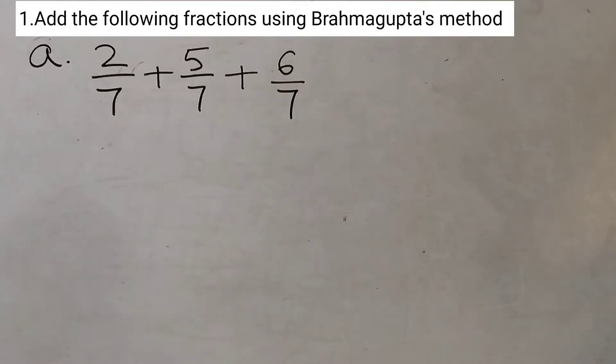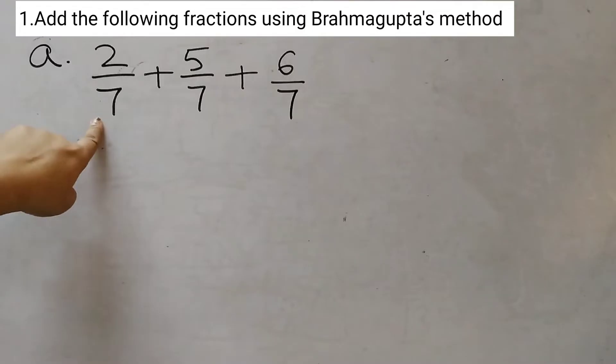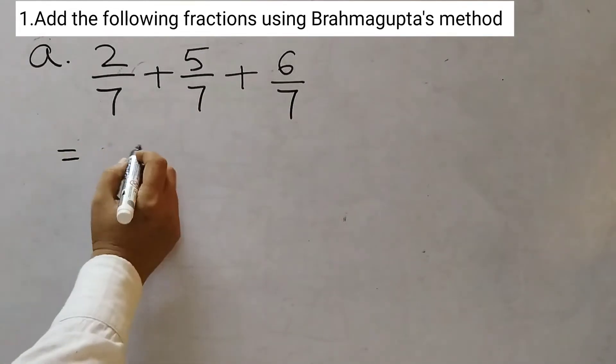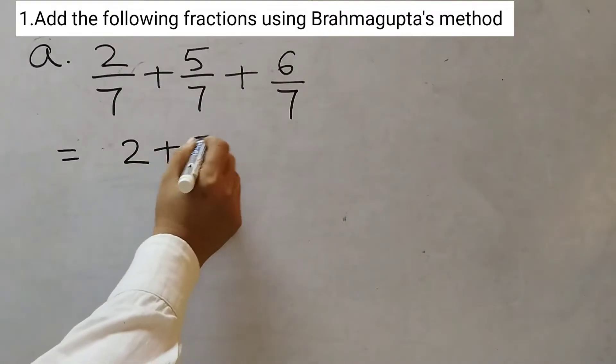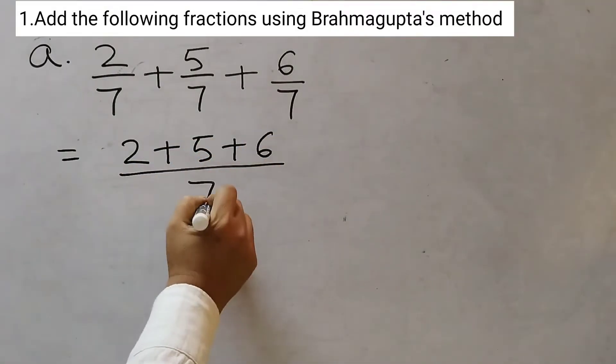We already know what is Brahma Gupta's method. So the first question is 2 by 7 plus 5 by 7 plus 6 by 7. Now here you see all the denominators are same 7, 7, 7. So just add up the numerators and keep the denominators as it is.